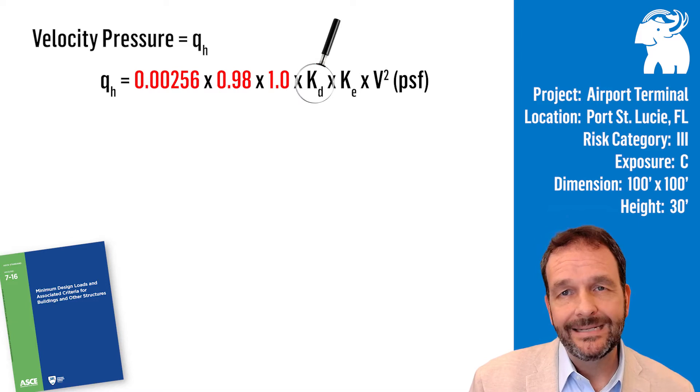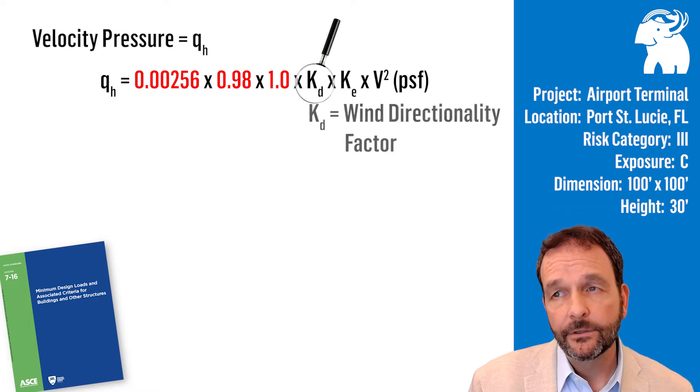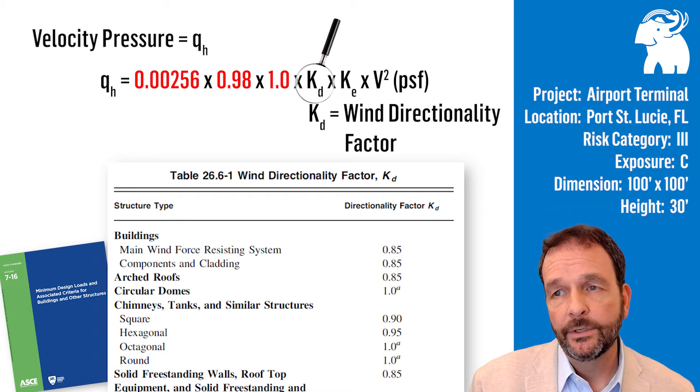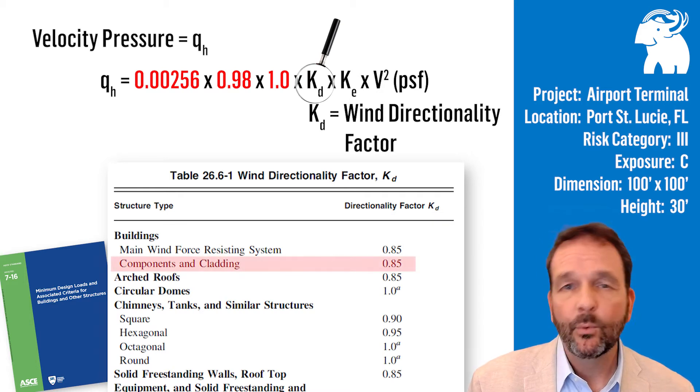The next variable is K sub D, a wind directionality factor. For roofs, for components and cladding, it's simple. It's pulled from table 26.6-1, and K sub D is 0.85.